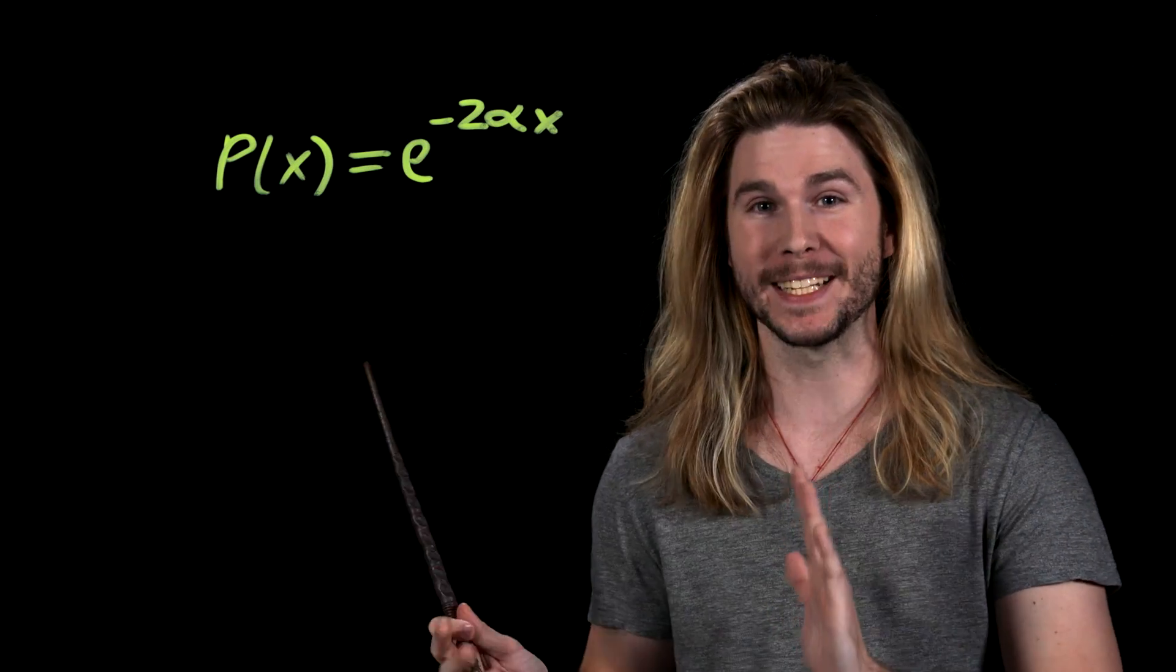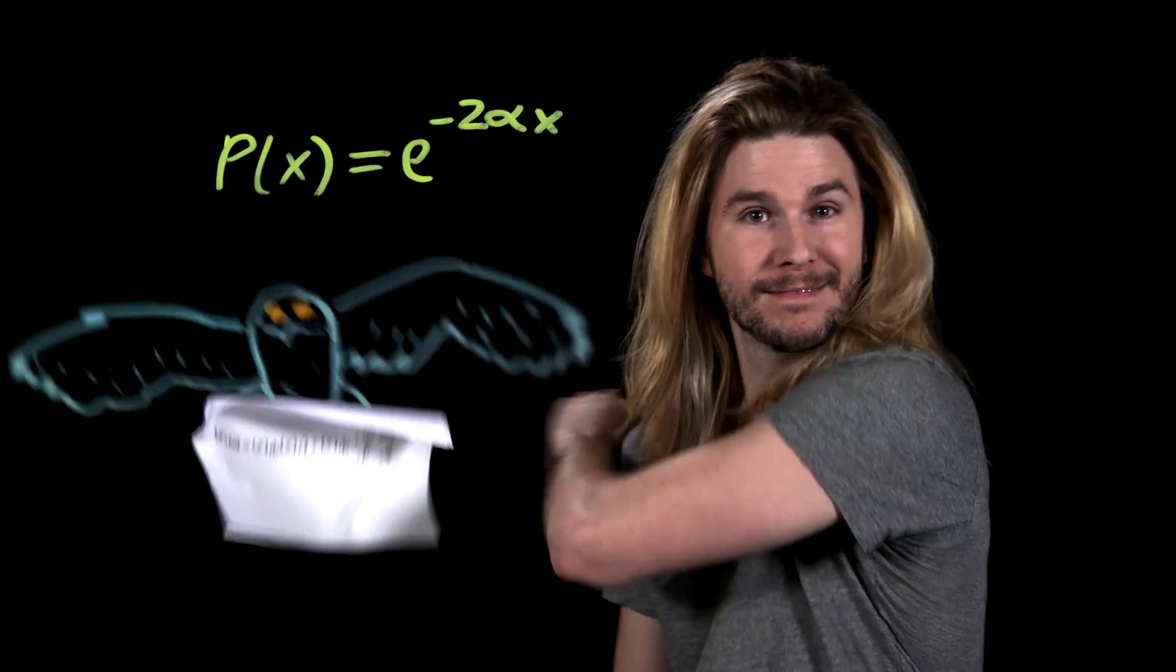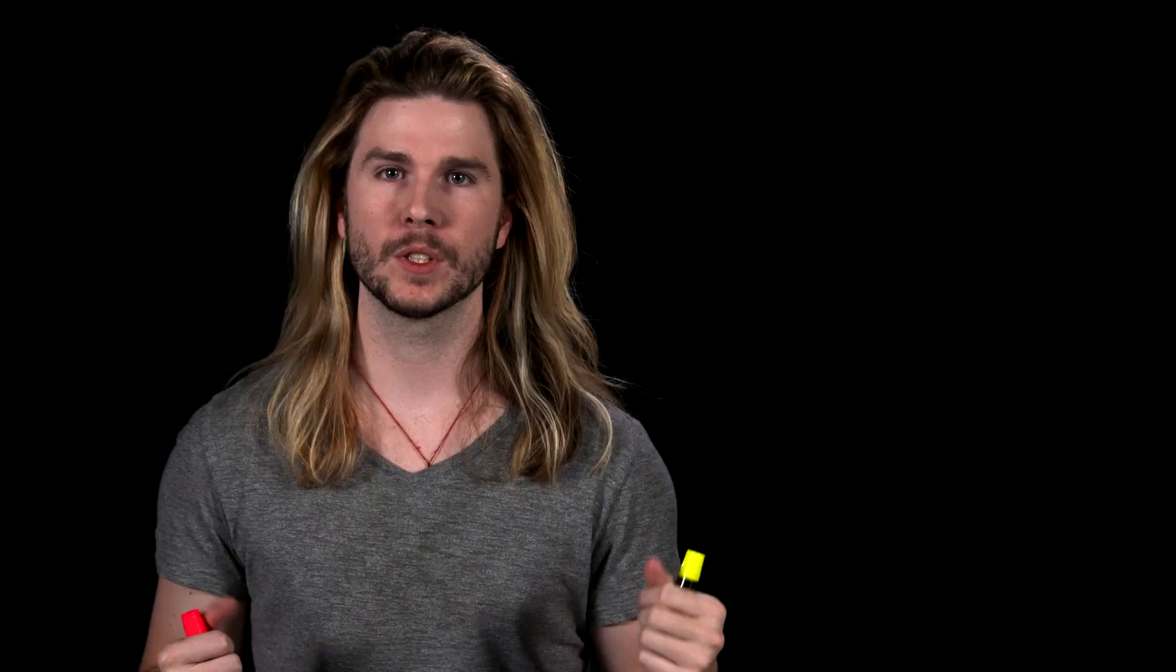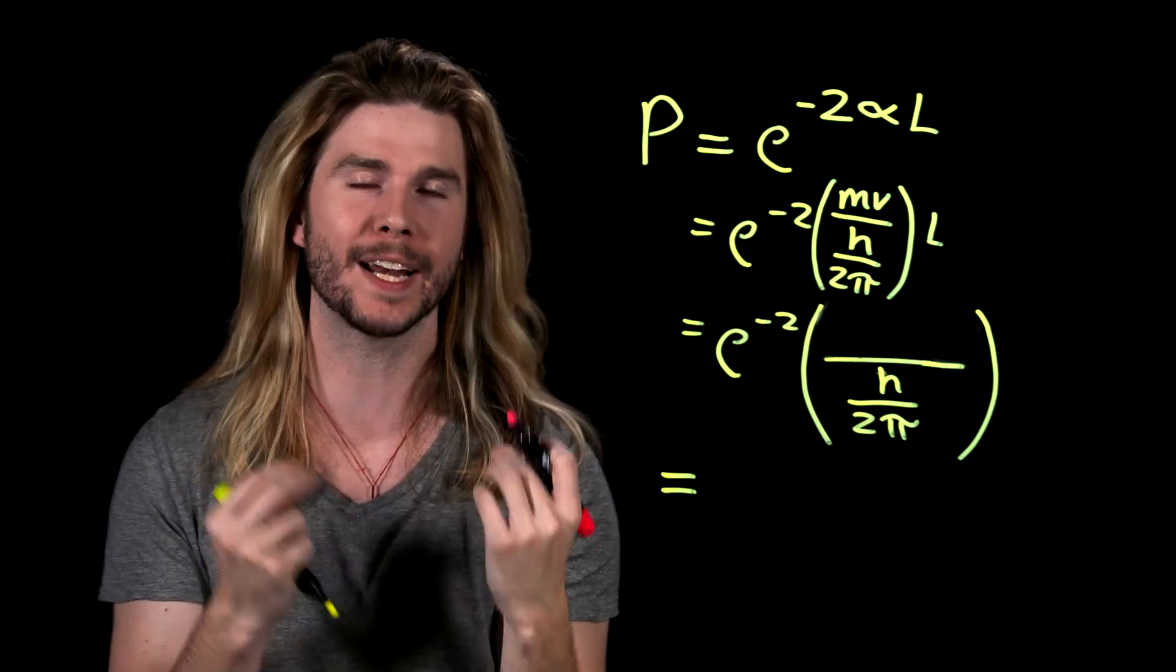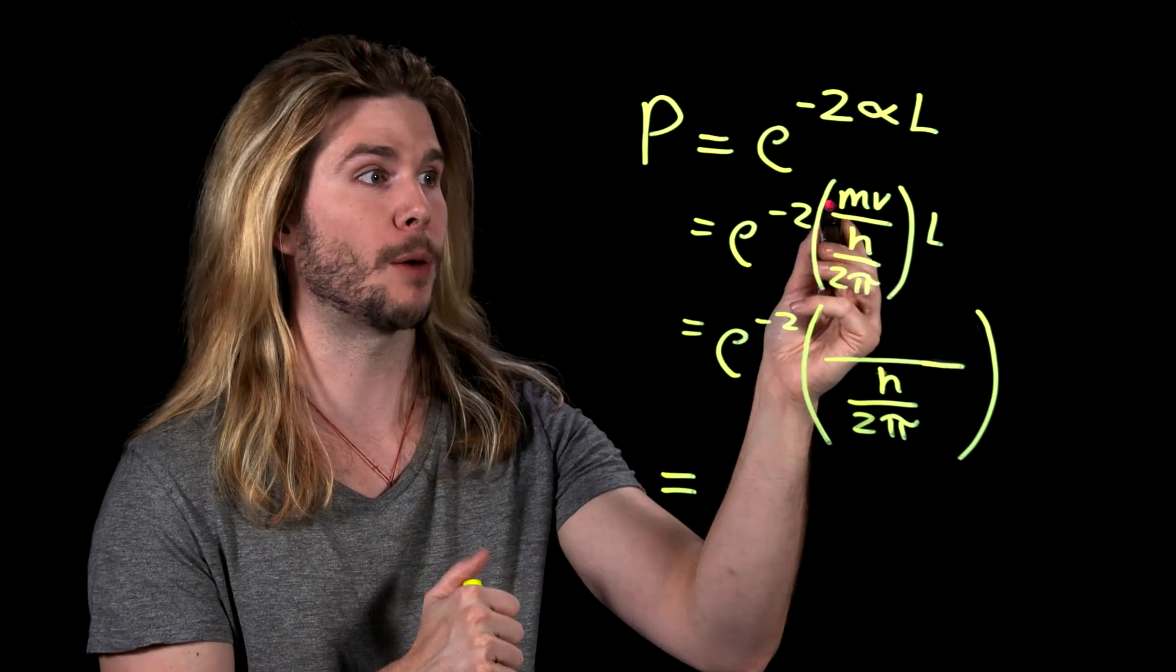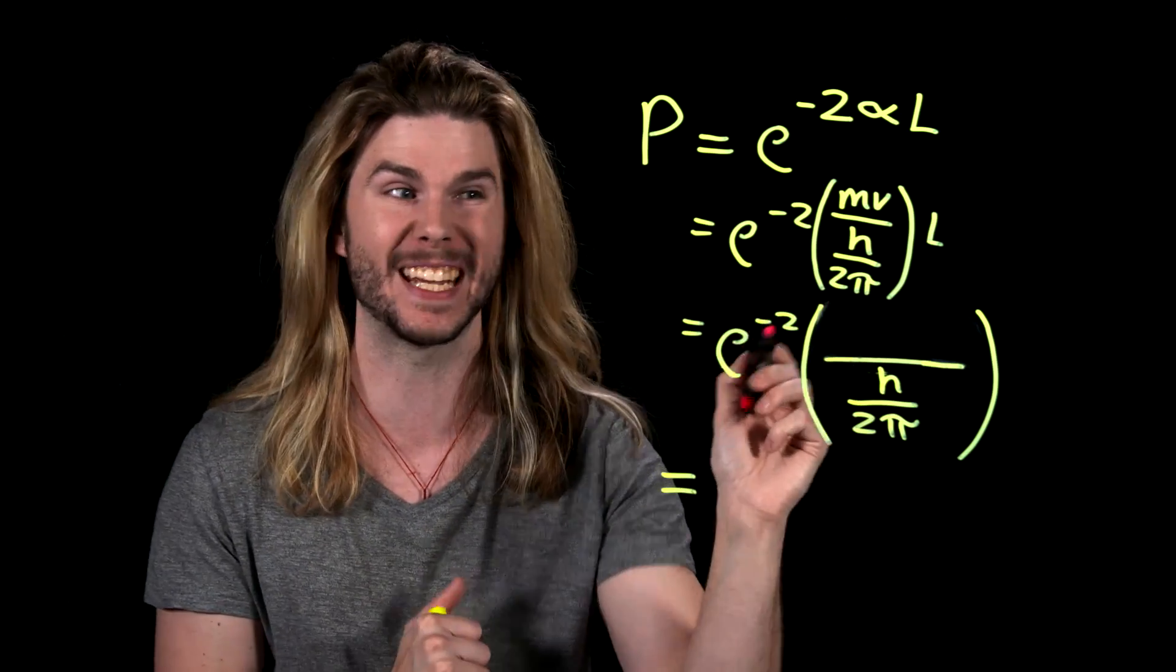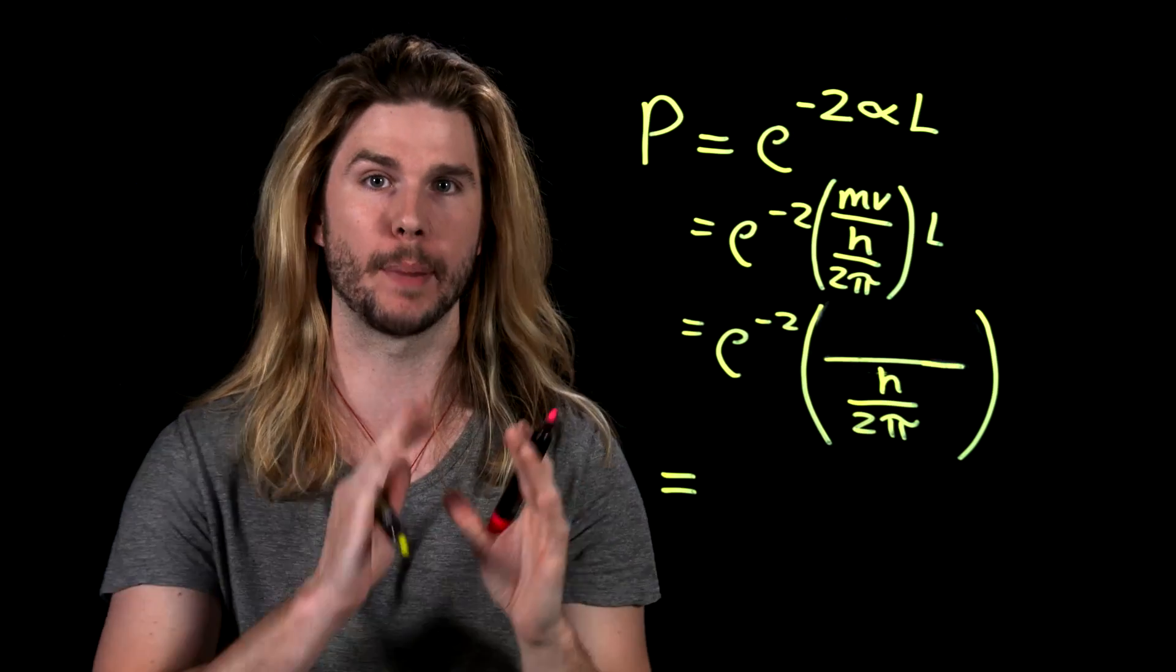The probability of us moving through a barrier like platform nine and three quarters is just exponent raised to negative two times our wave number times the width of the barrier. Again, this is all pretty dense, so if you're interested, you should read up on it. So let's follow Sophia's lead. Expanding this equation a bit, the probability that we are going to run through platform nine and three quarters is going to be equal to e raised to negative two times the wave number, which is just our momentum, mass times velocity, divided by Planck's constant, itself divided by two pi, all that multiplied by the width of the barrier.